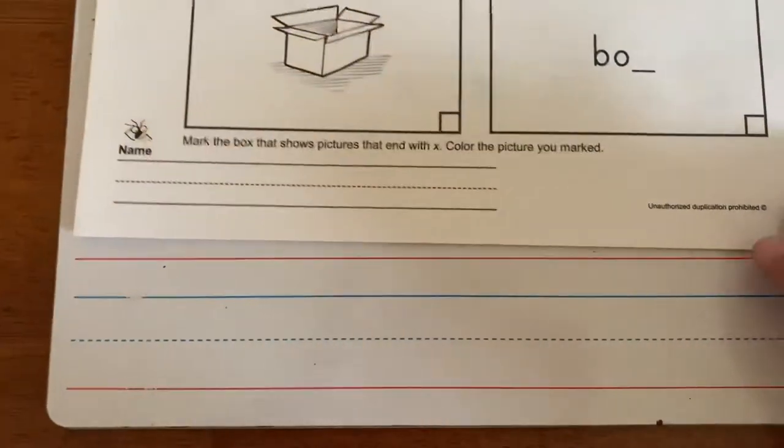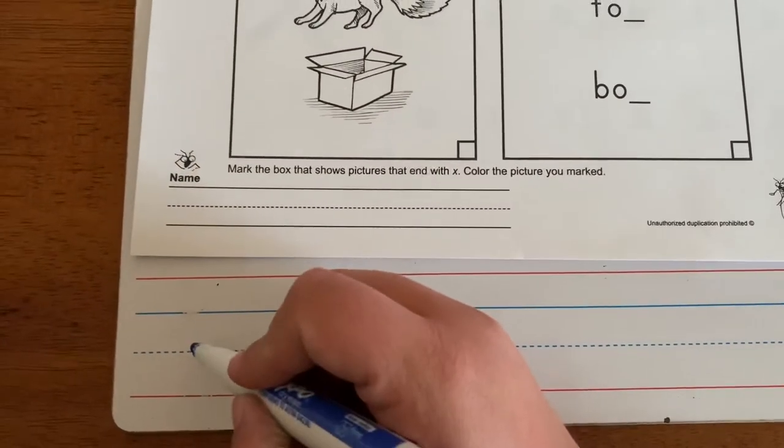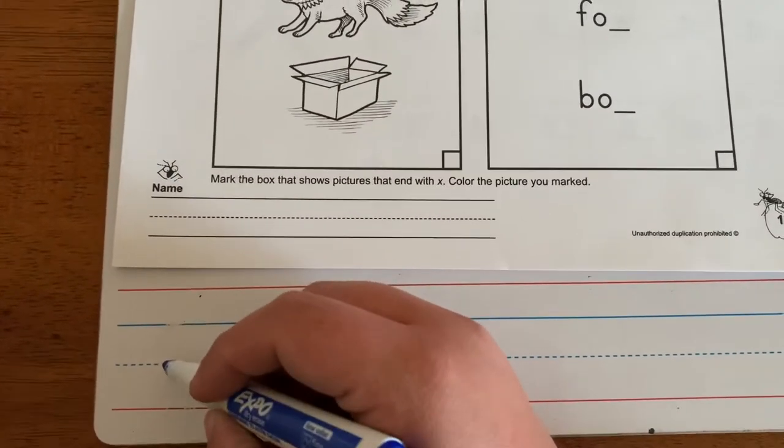We're gonna start with lowercase. Remember it's the sky, the fence, and the road. It's two slant straight lines. We're gonna slant down, pick it up, slant down the other way.